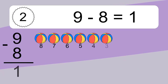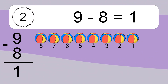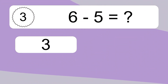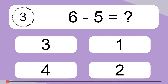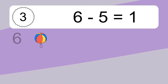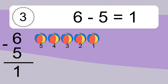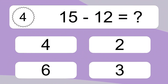9 minus 8 equals 1. Let's count it: 8, 7, 6, 5, 4, 3, 2, 1. 6 minus 5 equals what? 6 minus 5 equals 1. Let's count it: 5, 4, 3, 2, 1.